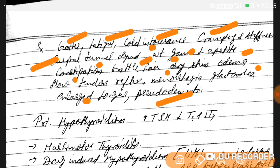A helpful way to remember hypothyroidism: everything slows down. From the GIT — constipation, slowed gut motility; cold intolerance; the patient is lethargic, weak, dull, with loss of appetite, slow tendon reflexes, and dry skin. Menorrhagia and galactorrhea occur because increased TRH also increases prolactin, and hyperprolactinemia causes these symptoms.